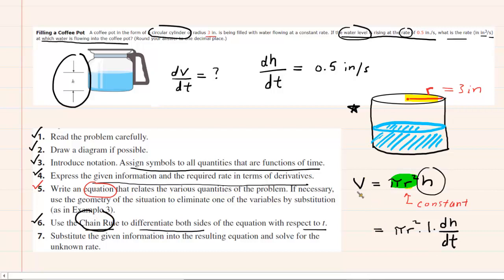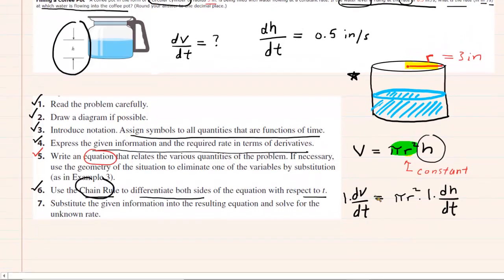On the other side, the derivative of volume with respect to time would be one times dv/dt. And so just make sure that when you differentiate your variables with respect to time, that you always include that notation in which you have the derivative of the variable with respect to time.